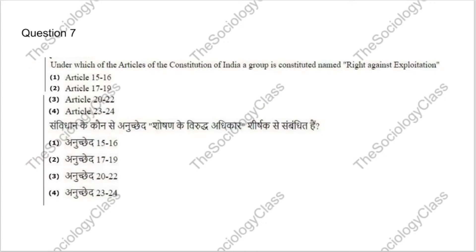Question 7: Under which article of the Constitution of India is the group constituted named 'Right against Exploitation'? Options: Article 15-16-17-19, 20-22, or 23-24. This is a very basic school-level question. The correct answer is D — Articles 23 and 24.